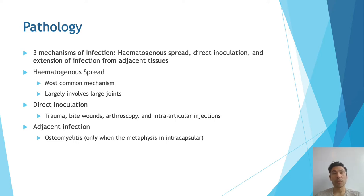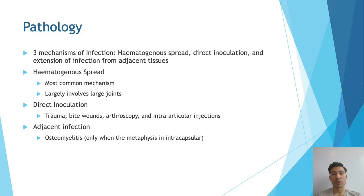The most common by far is hematogenous spread, and it largely involves larger joints. Direct inoculation tends to be via trauma, insect bites, animal bites, scopes, or intra-articular injections. Adjacent infections refers to osteomyelitis, or infection of the adjacent bone.